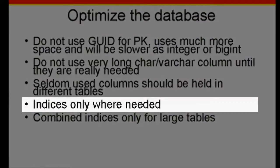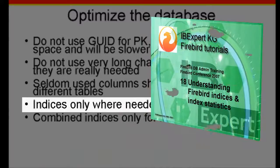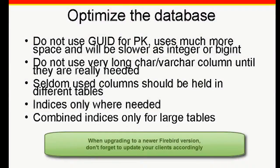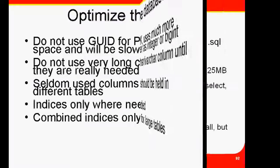Use indices only where necessary, as explained in tutorial 18, Understanding Firebird Index Statistics. Compound indices should only be used on large tables when they really help. If you are upgrading from an older Firebird version to the newer 2.1 or 2.5 versions, it is also important that you upgrade all your clients accordingly. The Firebird 2.1 or 2.5 client can communicate much more effectively with the Firebird 2.1 or 2.5 server, which can mean performance improvements of up to 40%.